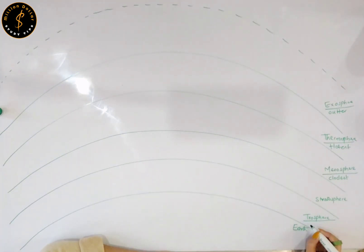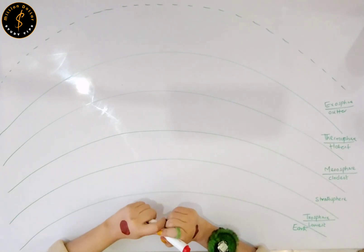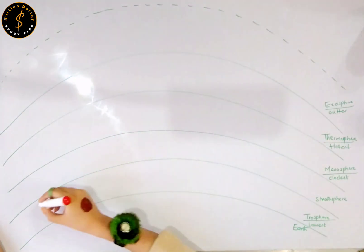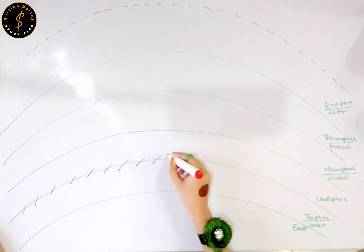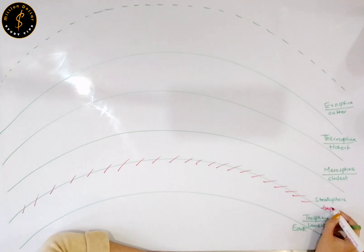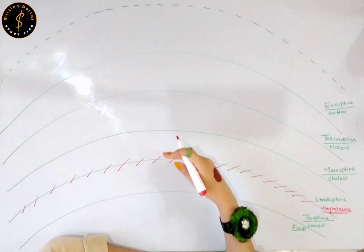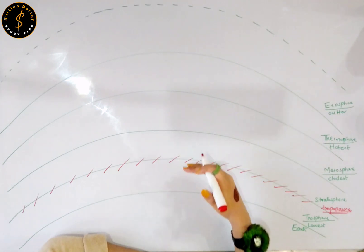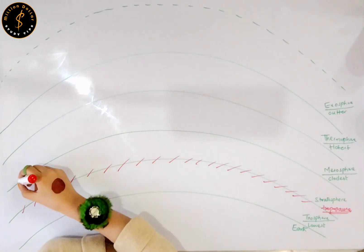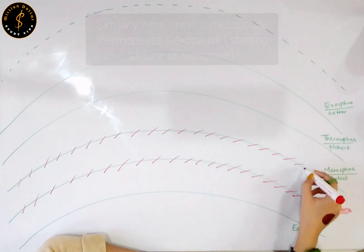Your troposphere is the lowest layer of your planet Earth. The transition zone between your troposphere and your stratosphere is known as the tropopause. It is the transition zone when you jump from one layer to the other layer — that transition path is known as your tropopause. Similarly, the transition zone between your stratosphere and mesosphere is known as the stratopause.